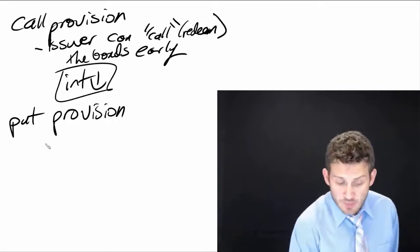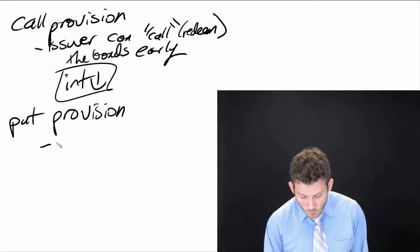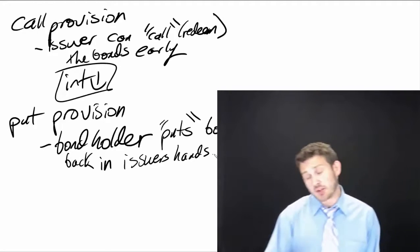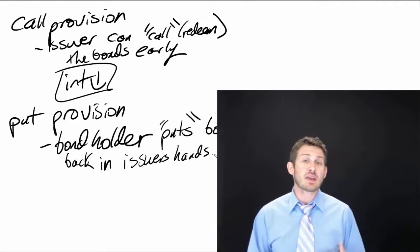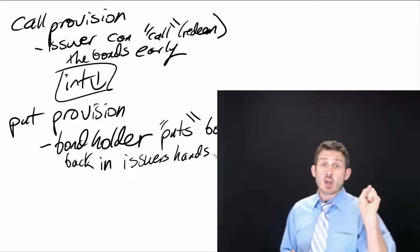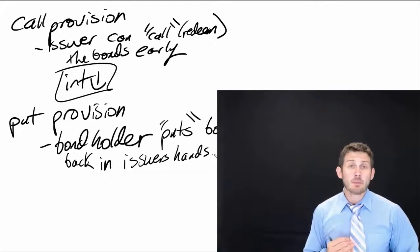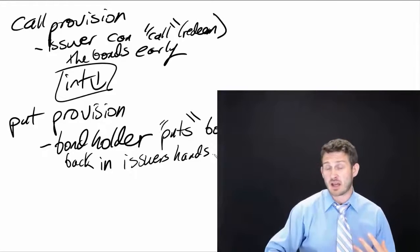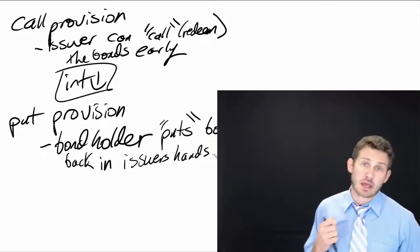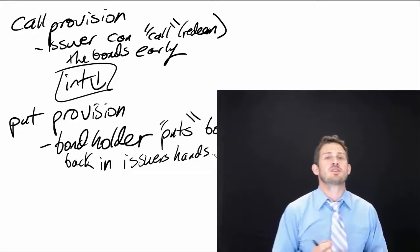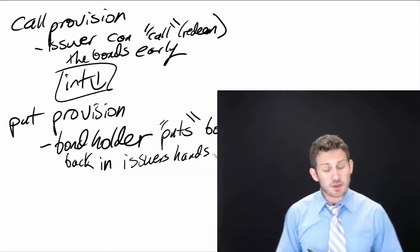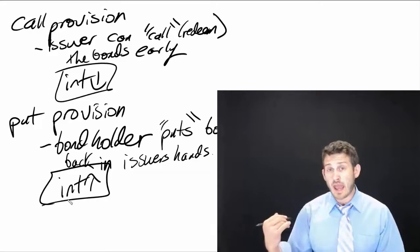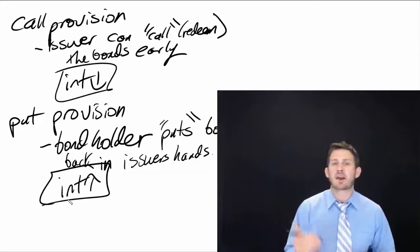A put provision is where the bond holder puts the bonds back into the issuer's hands — essentially saying 'give me my money back.' You don't see put provisions on most consumer loans; for example, a bank won't let you demand your mortgage principal back. But on bonds, if interest rates rise, the bond holder will want their cash back so they can go invest it elsewhere and get a higher rate of return.